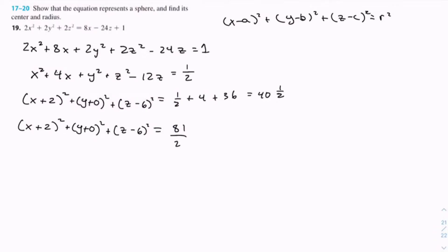We can find our center point using the formula we wrote above to be (-2, 0, 6), and our radius is the square root of 81/2, which equals 9/√2, which equals 9√2/2.